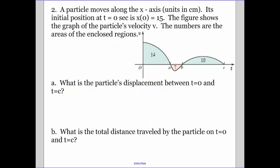Second example where we're looking now at a graph. So a particle moves along the x-axis, units and centimeters, and shows our initial position at t equals zero is fifteen. So that's going to be key to us. Make sure you're reading through the whole problem. The figure shows the graph of the particle's velocity. So this is a graph of v. And the numbers are areas of the region. What's the particle's displacement between t equals zero and t equals c? So our displacement now, we are going to basically add those areas together. So 14 minus 7 plus 10, that's going to be 17 centimeters.